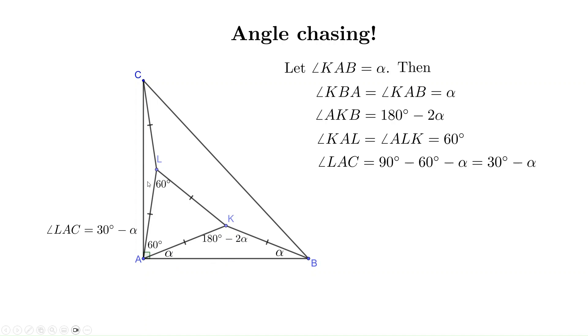LAC is an isosceles triangle. This is one of the base angles, then the other one, LCA, also has 30 - α. Then the last angle in this triangle has measure 120 + 2α. The sum of these three angles is 180 degrees.